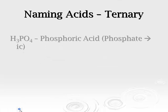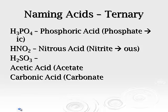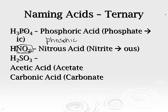Let's do some practice. You have to become familiar with your polyatomic ions. Phosphate is PO4, and it will go to phosphoric acid — phosphoric is the best option. Now, HNO2: NO2 is the nitrite ion. Remember, if it's -ite, we go -ous, so it becomes nitrous acid.